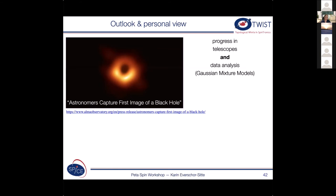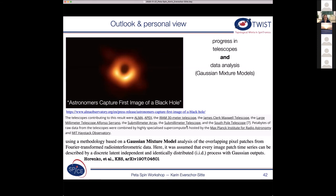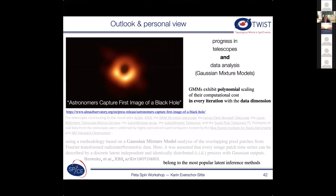So to be a bit more precise, so there were a lot of telescopes involved. And the data analysis tools that were used were Gaussian mixture models. And I'm not going to go into any of these details. But just let me mention that these Gaussian mixture models do scale polynomially in the iteration cost when you have more and more data. Still, they belong to the most popular latent inference methods.